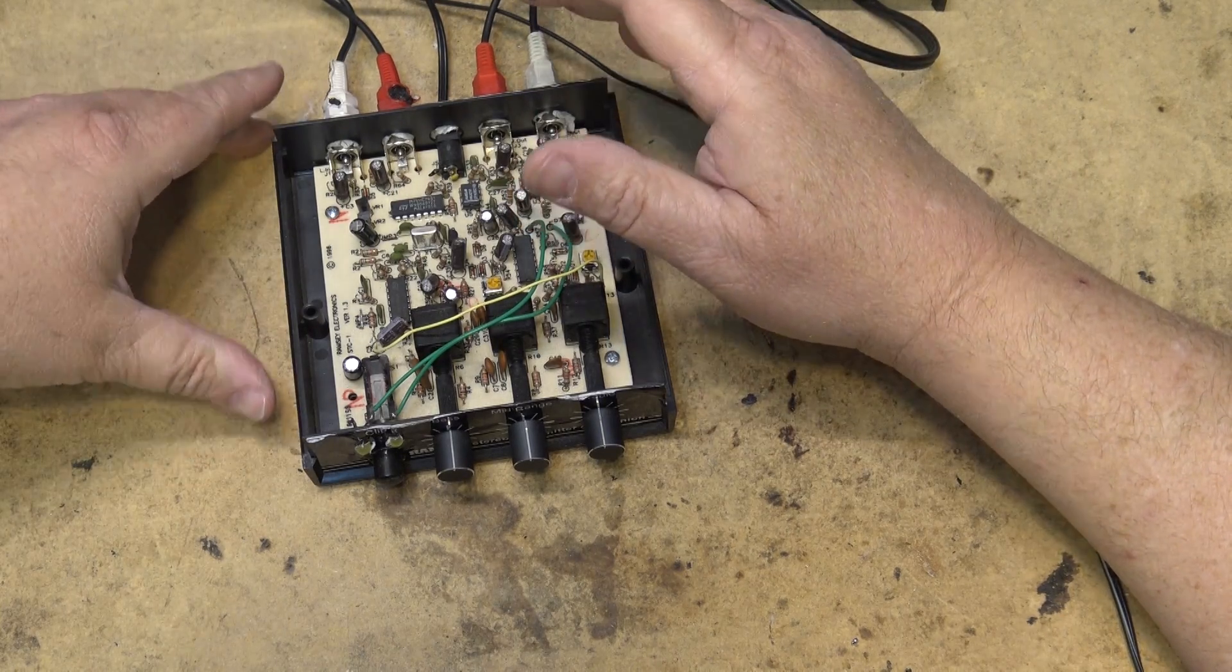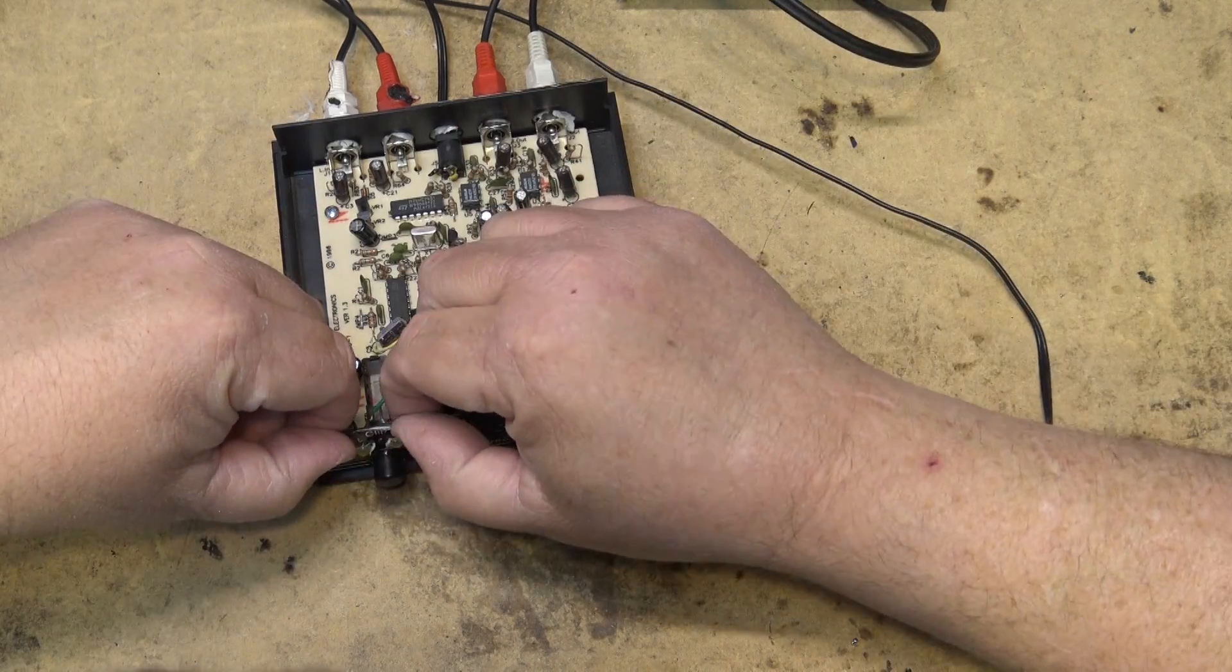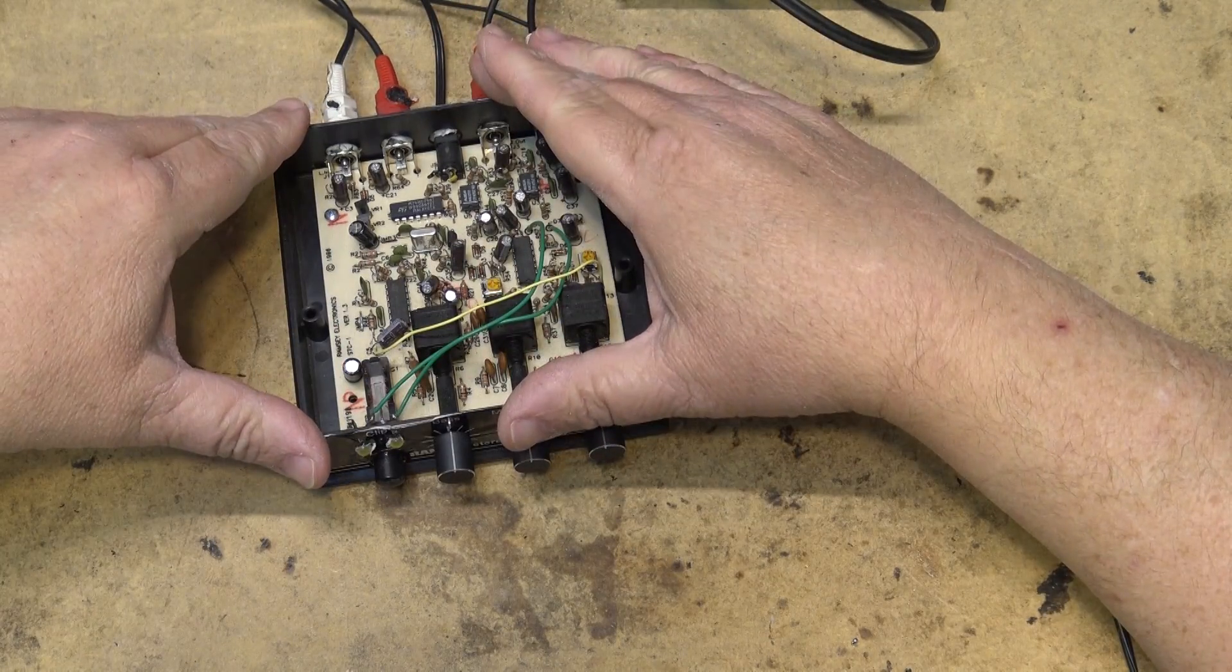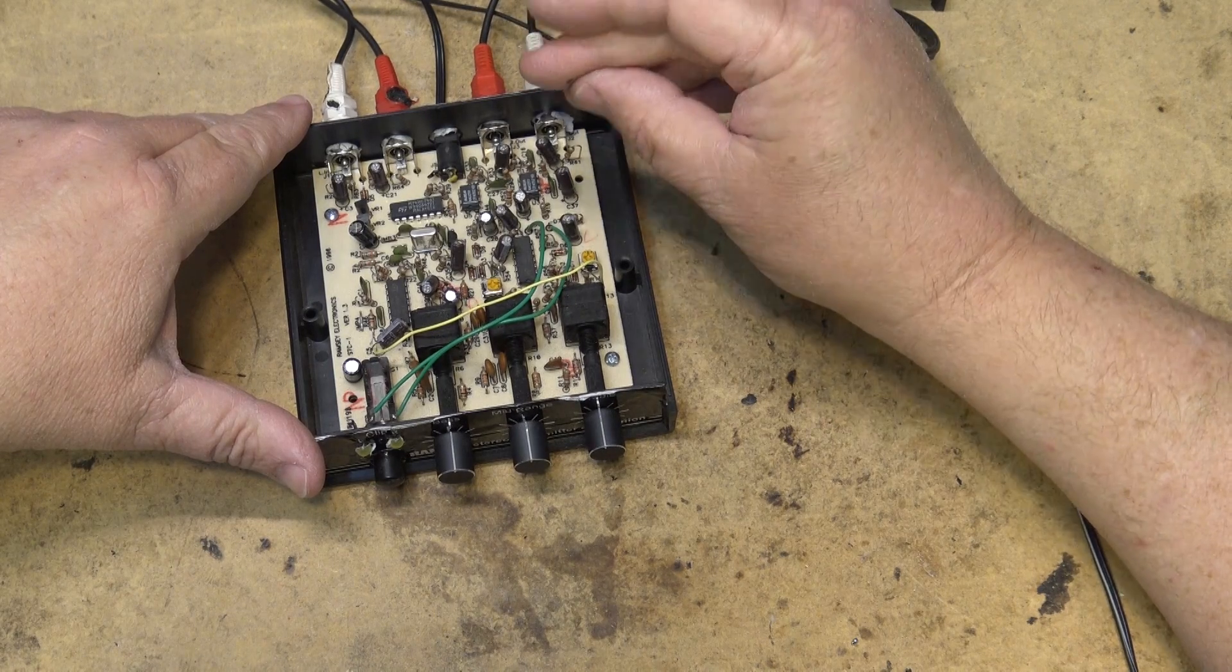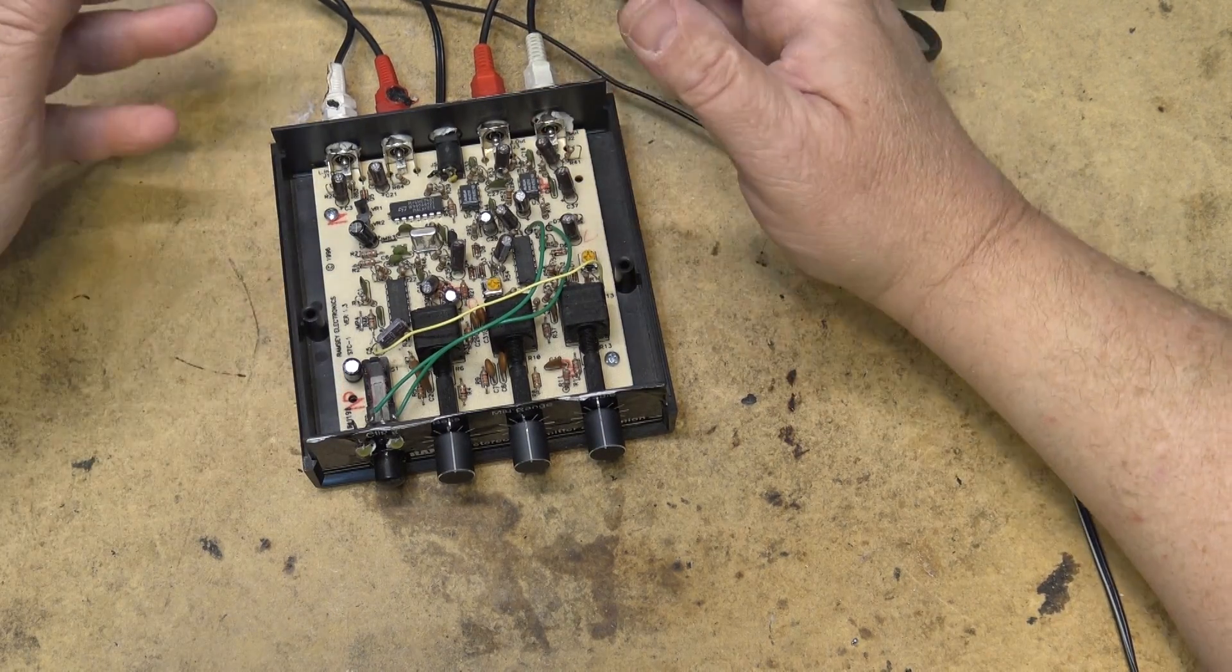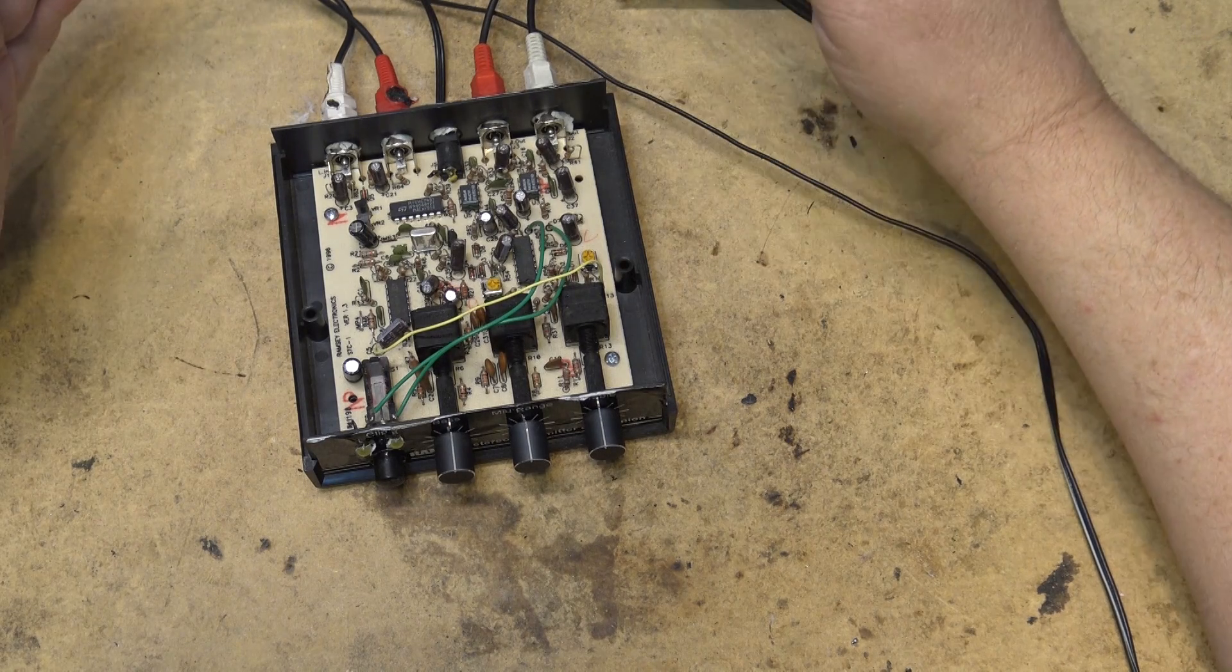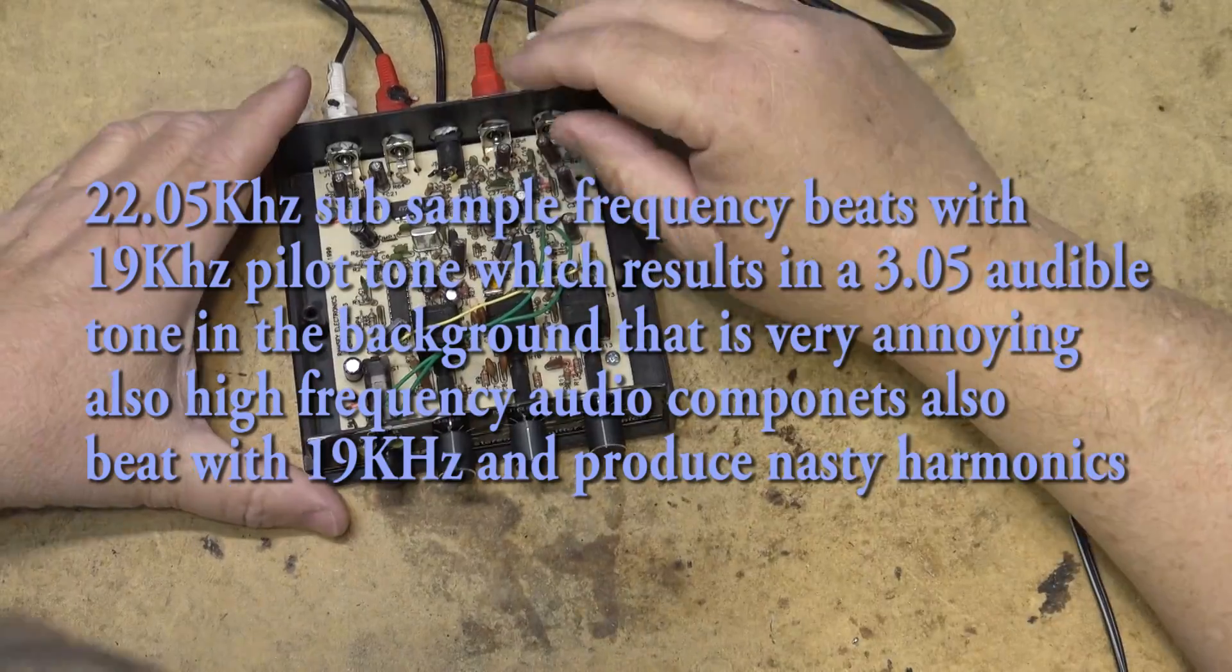What this was being used for was it was driving an FM transmitter into a closed circuit, like a cable system. They wanted to limit the sound. They were using it with a CD player and they wanted to limit the level so that it wouldn't over-modulate.